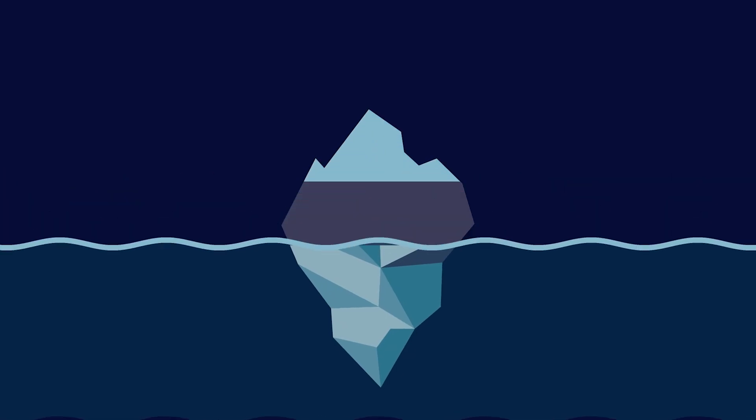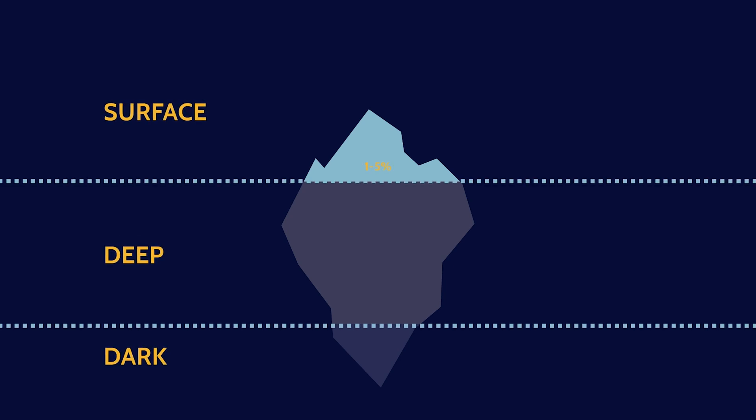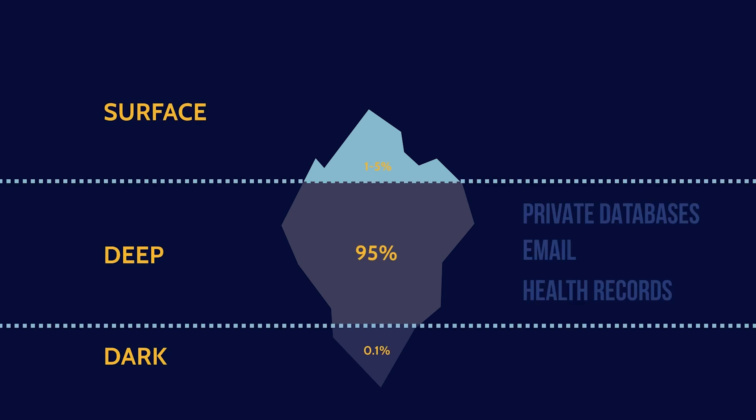A large part of the hidden internet is the deep web, which includes all of the unindexed parts, such as private databases, email, and electronic health records, among other things accessible through standard web browsers. Buried even deeper is the dark web — the hidden subset of the deep web, accessible only via special software, hosting both legitimate and illicit activities.